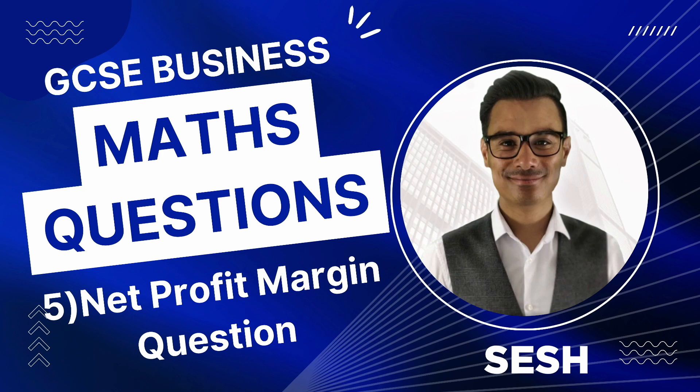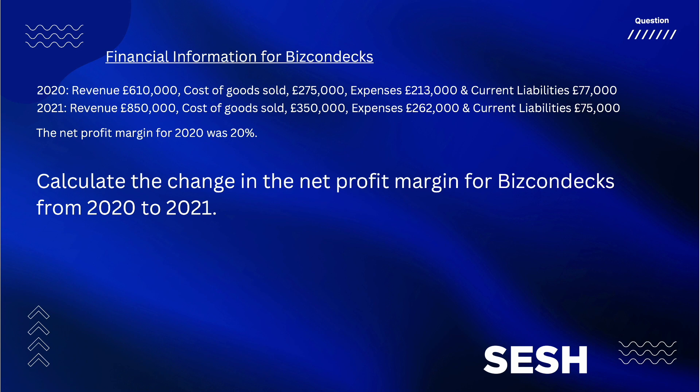Let's have a session on GCSE Business Maths Questions. This is on Net Profit Margin. Here's the question and here's the financial information for BizCon Dex. For 2020 and 2021, we've got revenue, cost of goods sold, expenses and current liabilities.